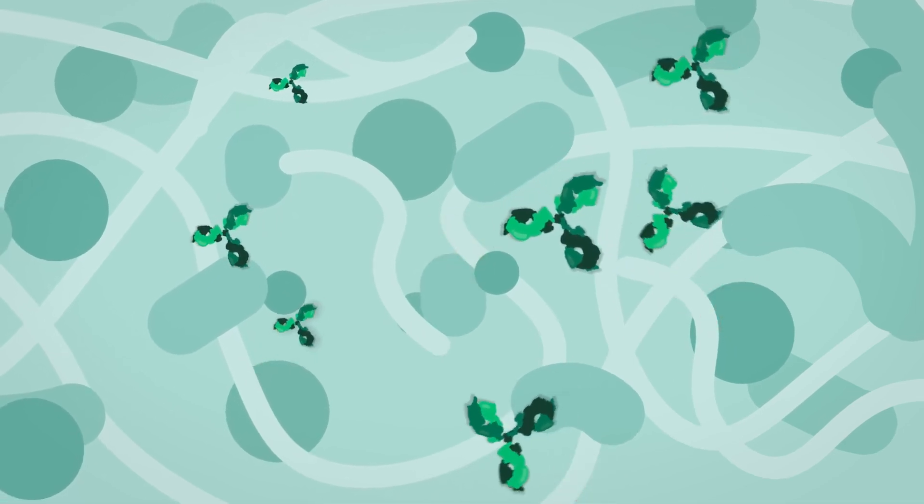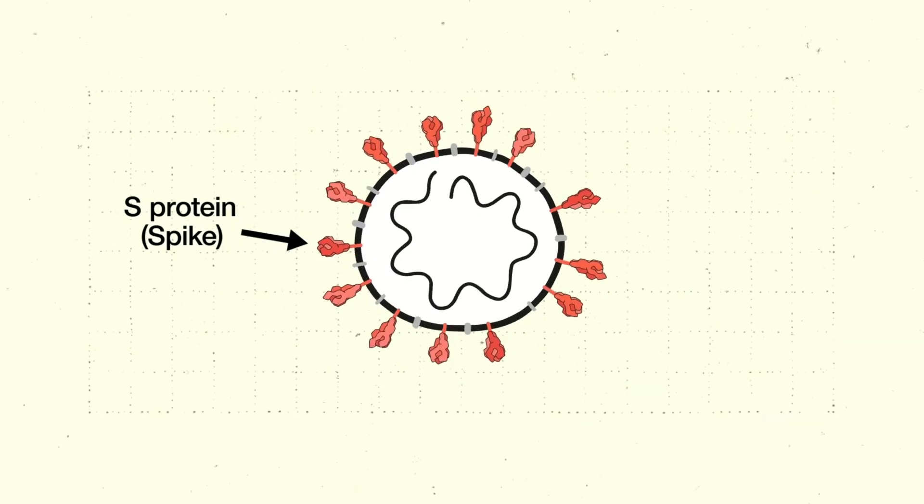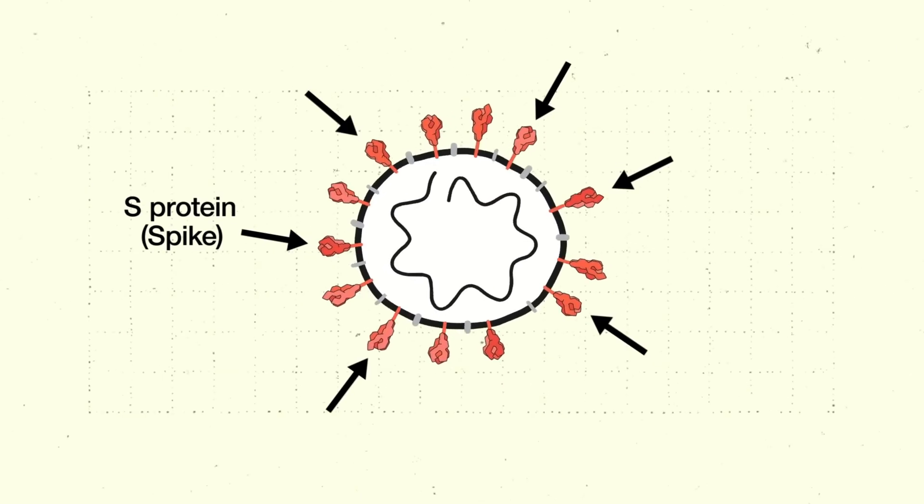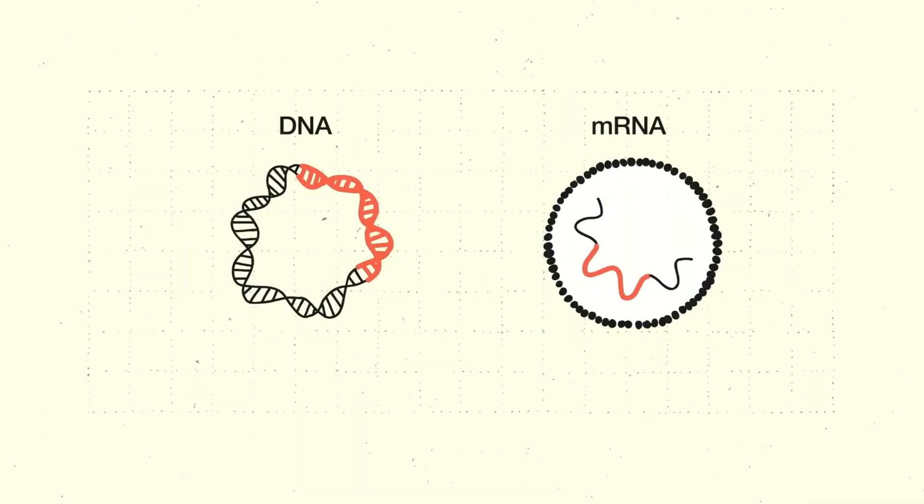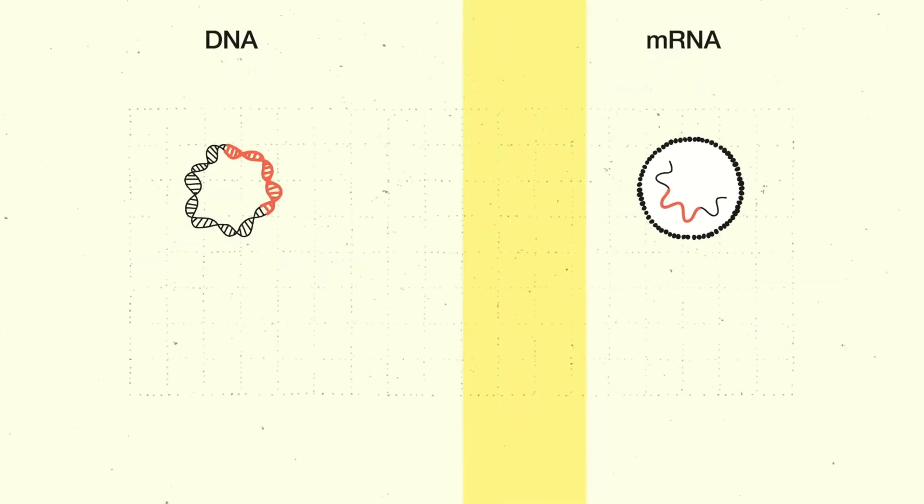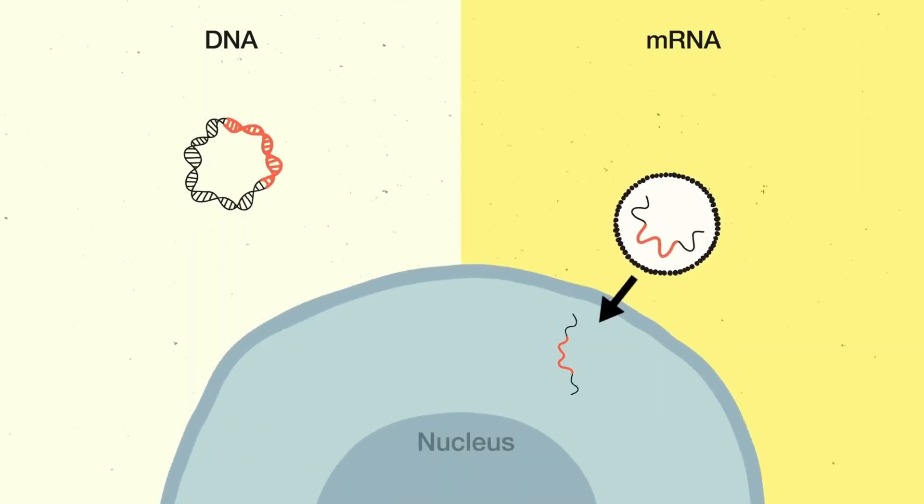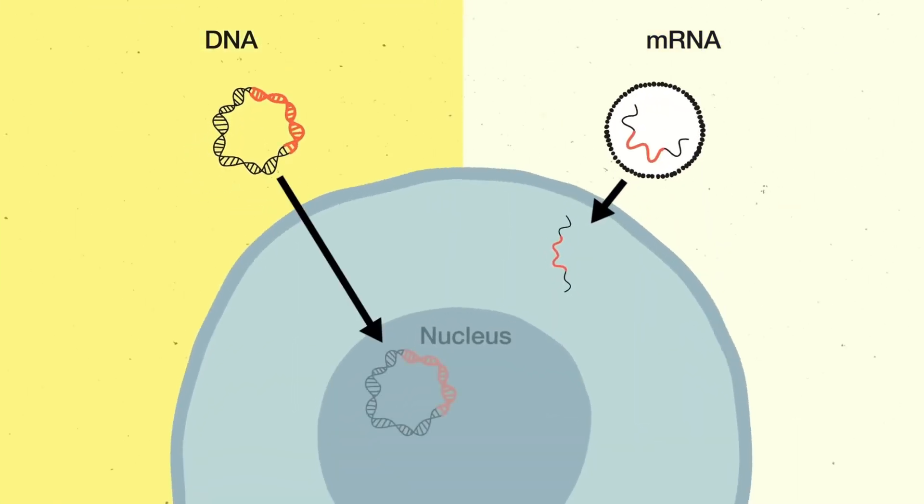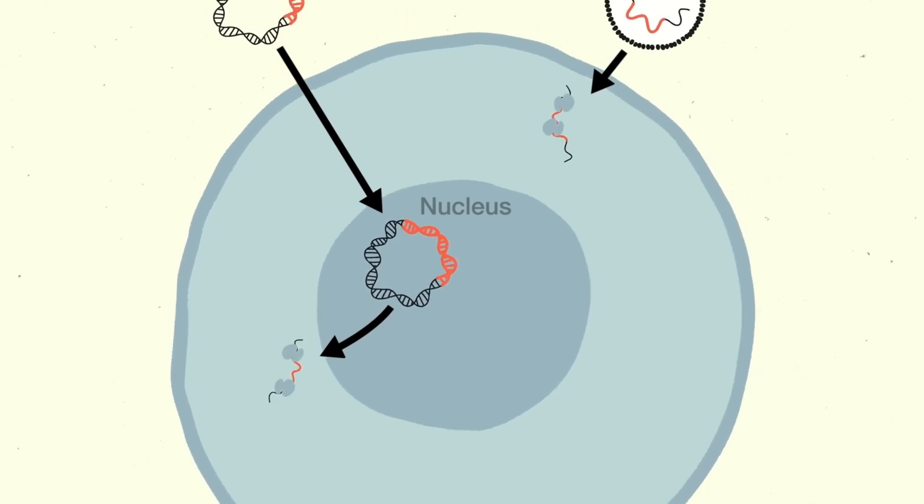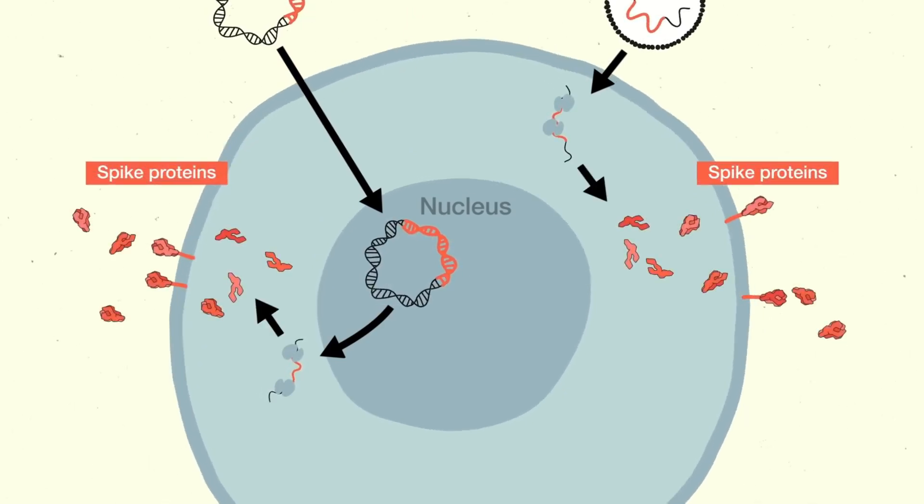It typically takes a few weeks after vaccination for the body to produce T lymphocytes and B lymphocytes. Therefore, it is possible that a person could be infected with the virus that causes COVID-19 just before or just after vaccination and then get sick because the vaccine did not have enough time to provide protection.